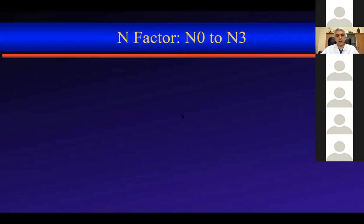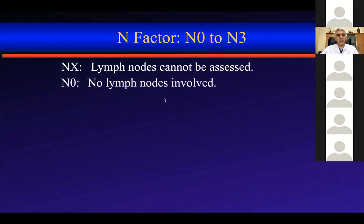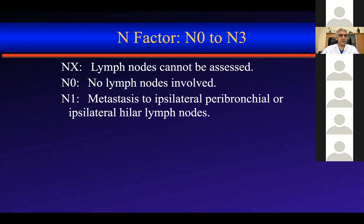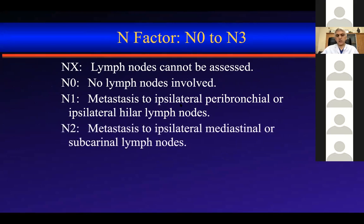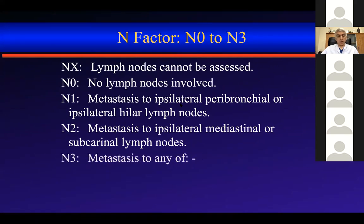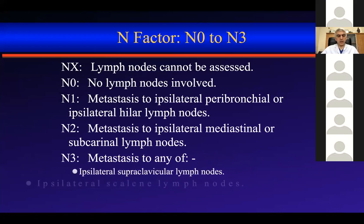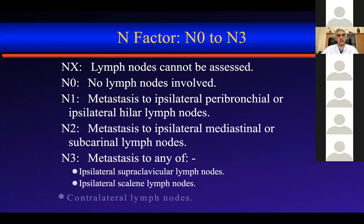Since the operation is not justified if it doesn't benefit the patient, we shouldn't operate N2 or N3 patients. The N factor runs from N0 to N3. Nx means lymph nodes cannot be assessed. N0 means no lymph nodes involved. N1 denotes metastasis to ipsilateral peribronchial or ipsilateral hilar lymph nodes. N2 means metastasis to ipsilateral mediastinal or subcarinal lymph nodes. N3 is when there is ipsilateral supraclavicular, contralateral hilar, or contralateral mediastinal lymph node metastasis.